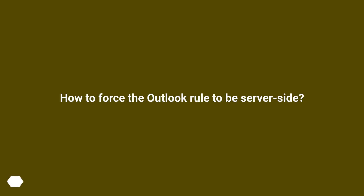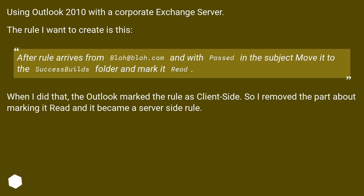How to force an Outlook rule to be server-side? Using Outlook 2010 with a corporate Exchange server. The rule I want to create is: after a message arrives from blah@blah.com with 'passed' in the subject, move it to the success builds folder and mark it red.